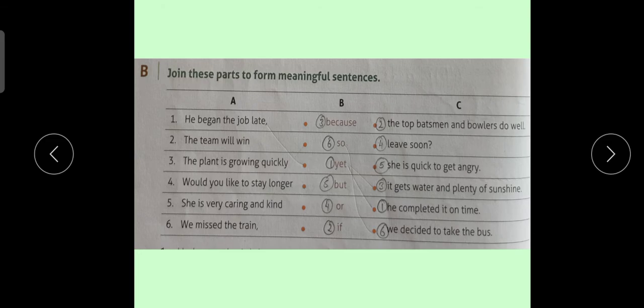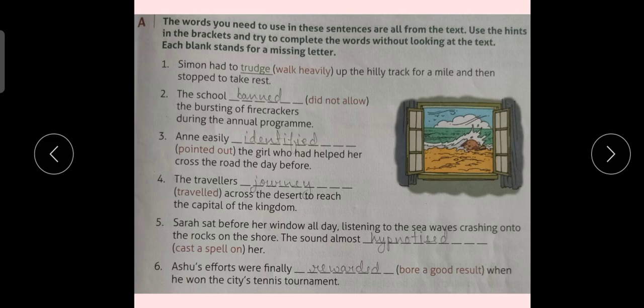Now we will move on to our next exercise. This exercise belongs to words and usage content. Exercise A: the words you need to use in these sentences are all from the text. Use the hints in the brackets and try to complete the words without looking at the text. Each blank stands for a missing letter.